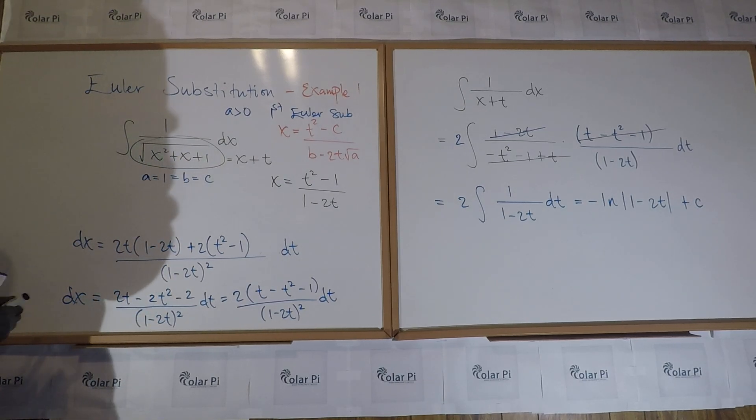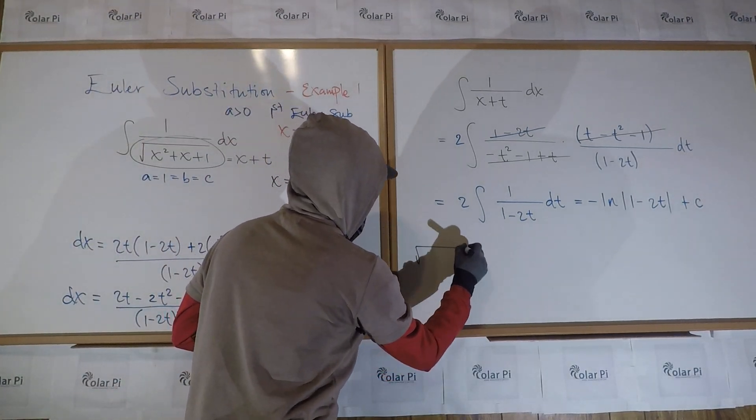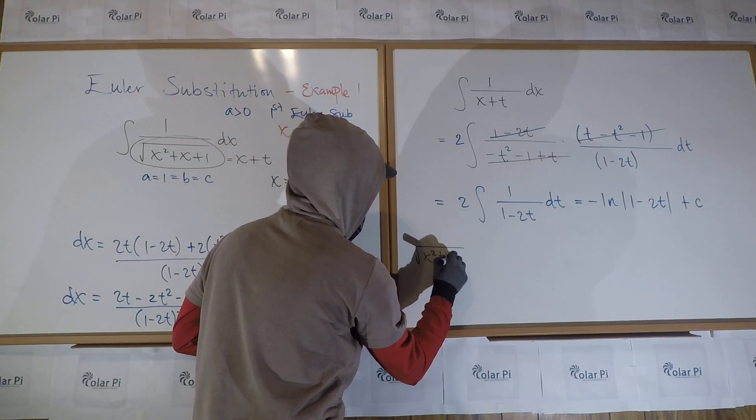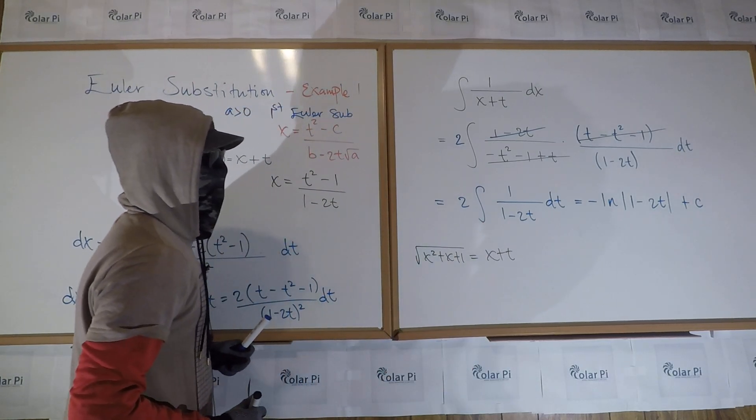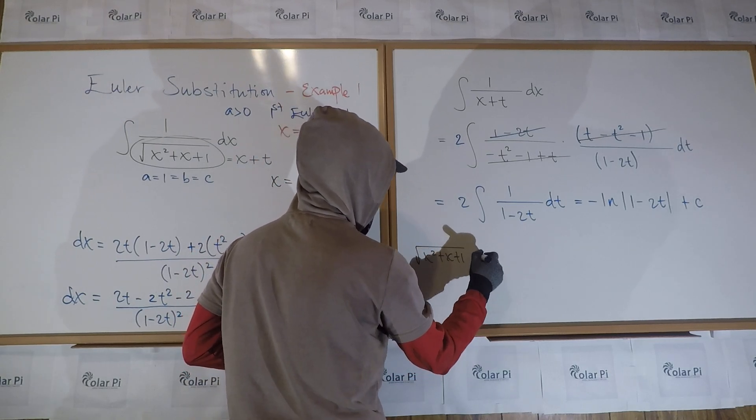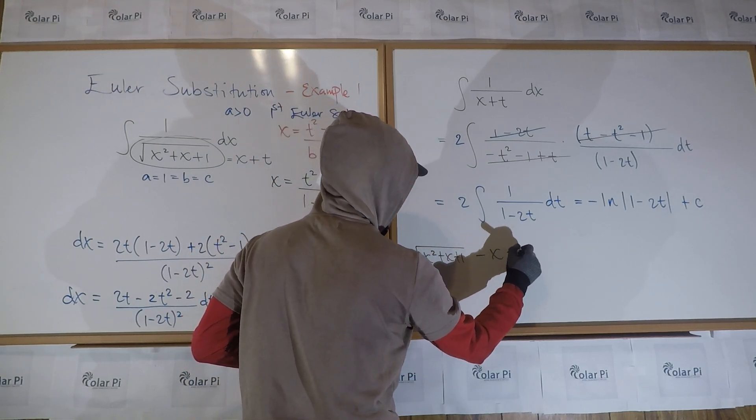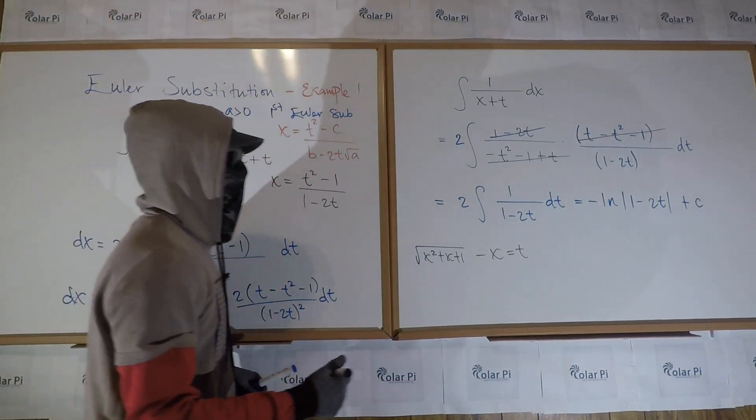Remember, root X squared plus X plus one we said is equal to X plus T. So that means that the square root quantity minus X is equal to T. So we have a way to replace T.